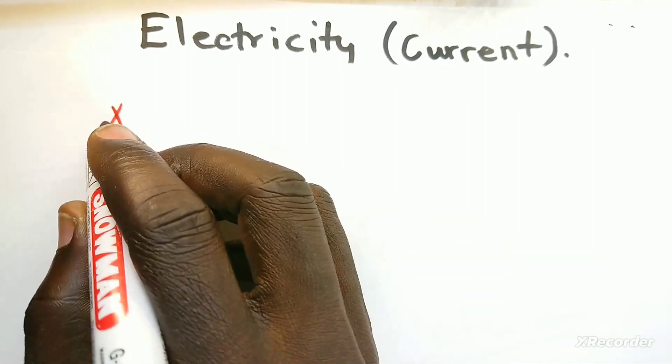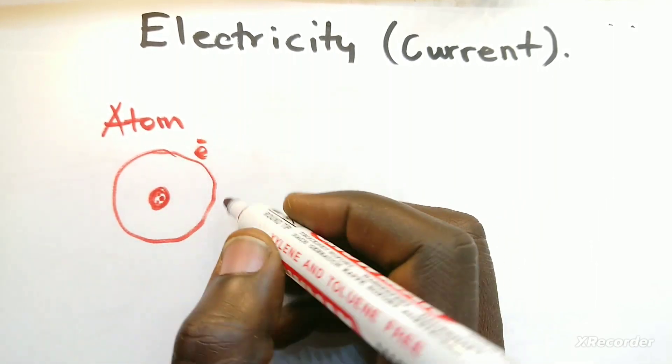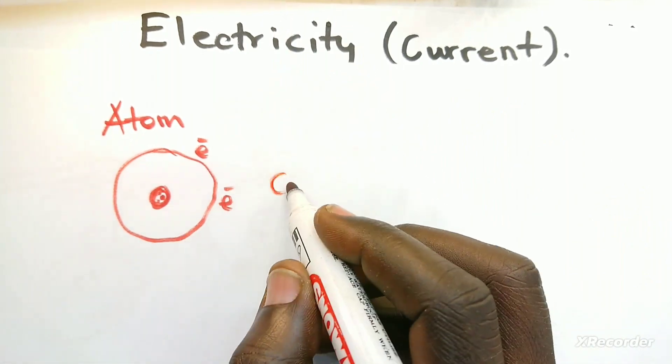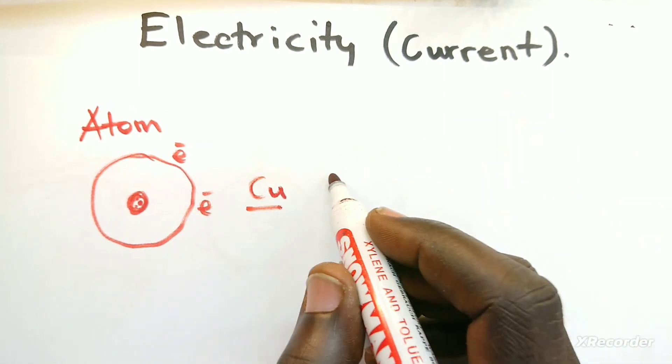We earlier mentioned that an atom is made out of a nucleus and electrons in a shell. For instance, if that were an atom of copper, it would have a nucleus and electrons flowing around.